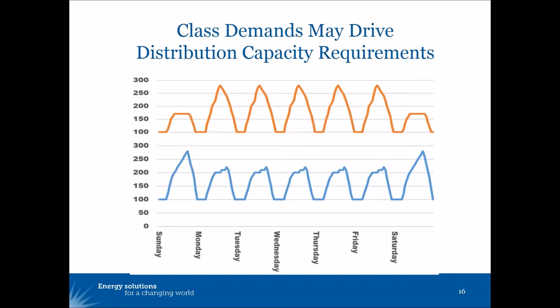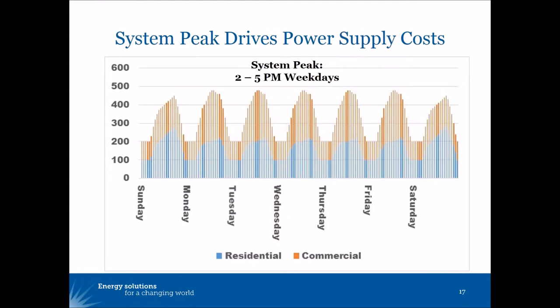One would want to know what it all adds up to. The class demands may drive the distribution capacity requirements. Residential circuits need to be sized to handle their weekend demands, and commercial circuits need to be designed to handle weekday demands. But when you put it together, it's the system peak that drives the power supply costs — and in this case, the system peak turns out to be 2 to 5 p.m. weekdays.